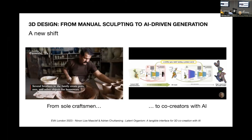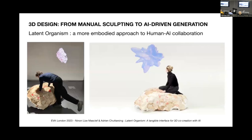AI introduces new levels of complexity and the usability of these new tools often varies in controllability. With Latent Organism, our project addresses the need for a more embodied approach to human-AI collaboration. Unlike most generative model systems, our interface has a biological, flesh-like appearance, creating a tangible link between the user and the imagination of the machine.